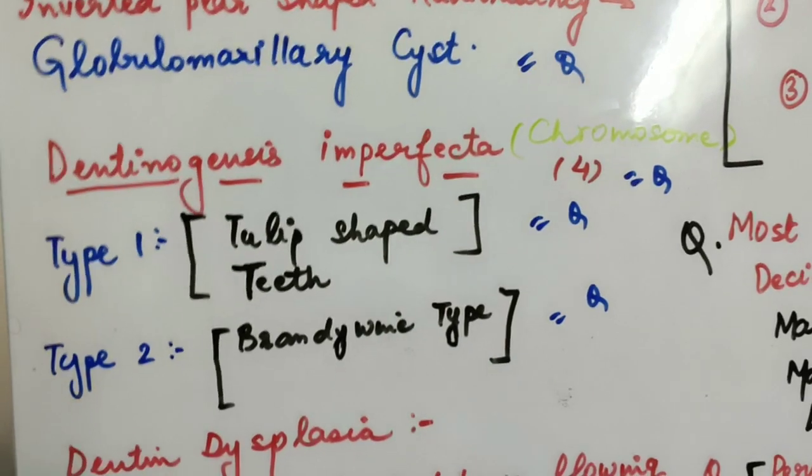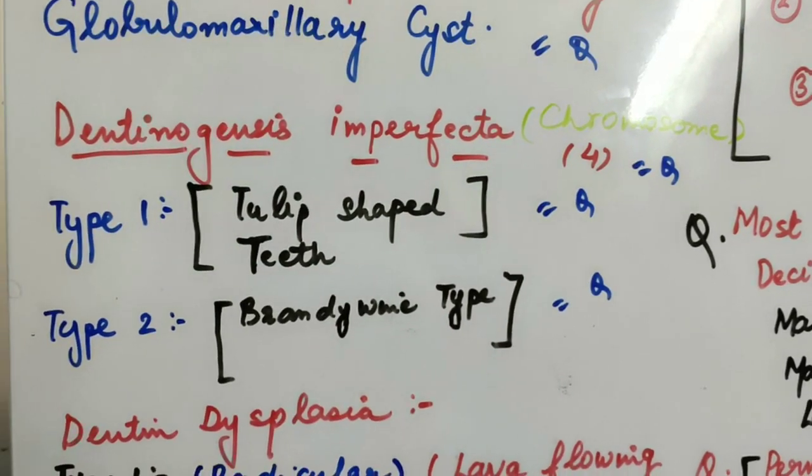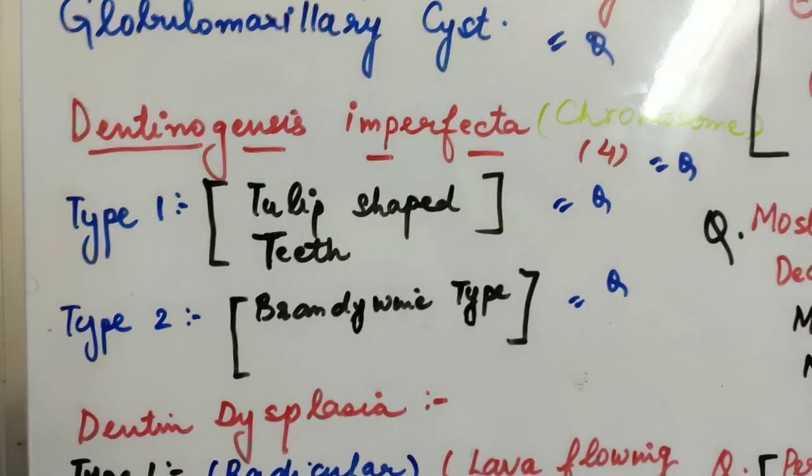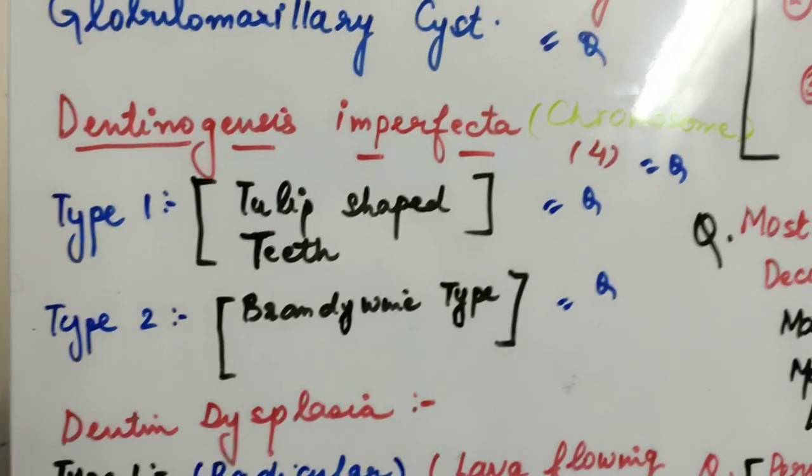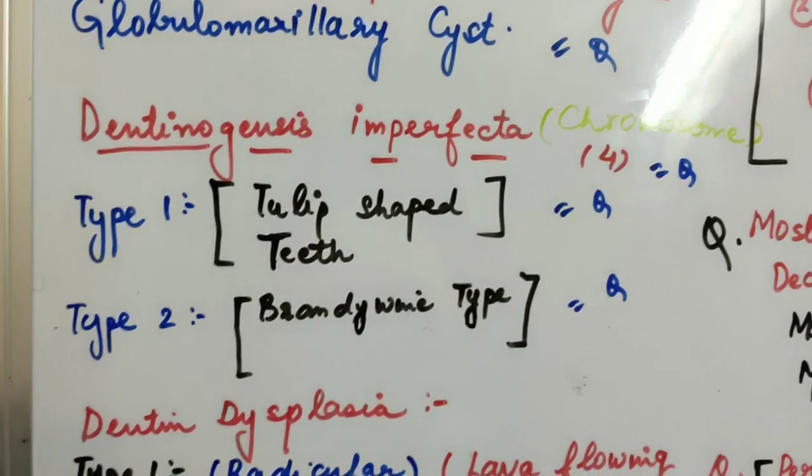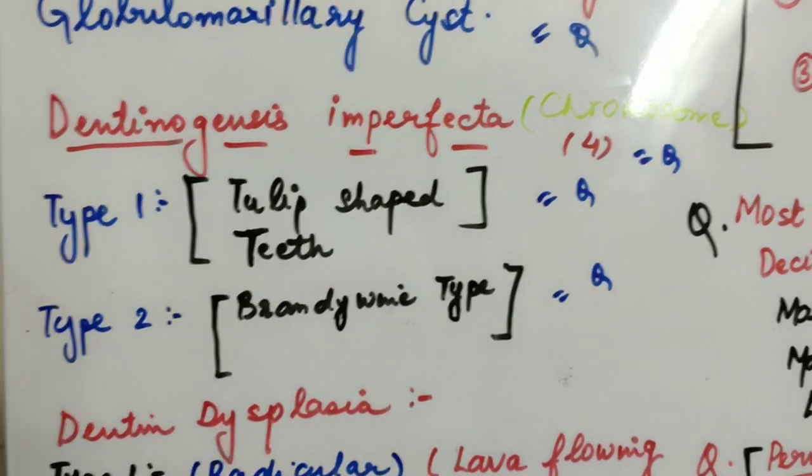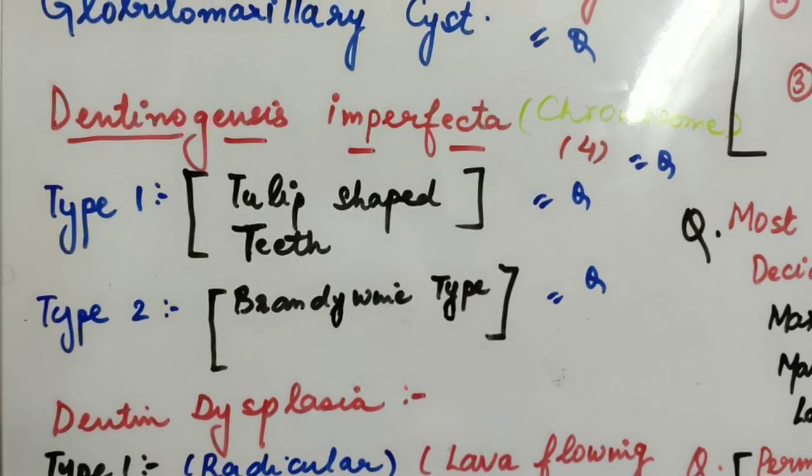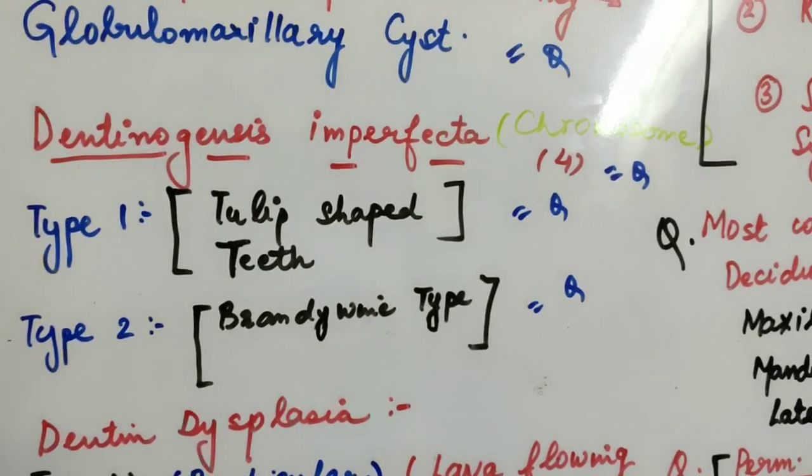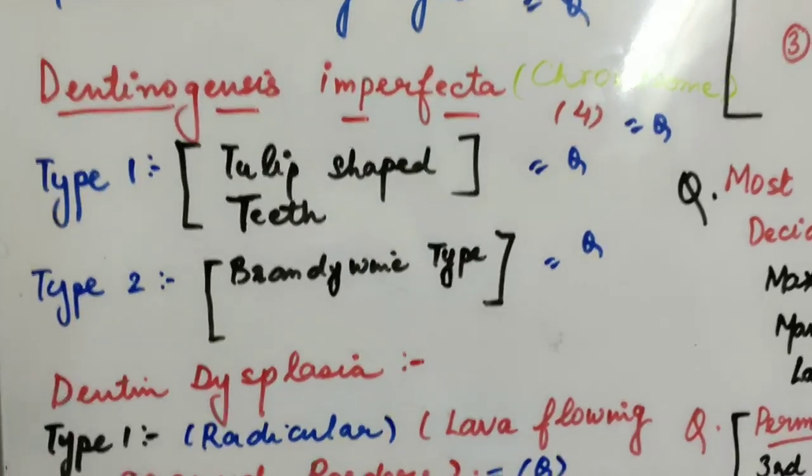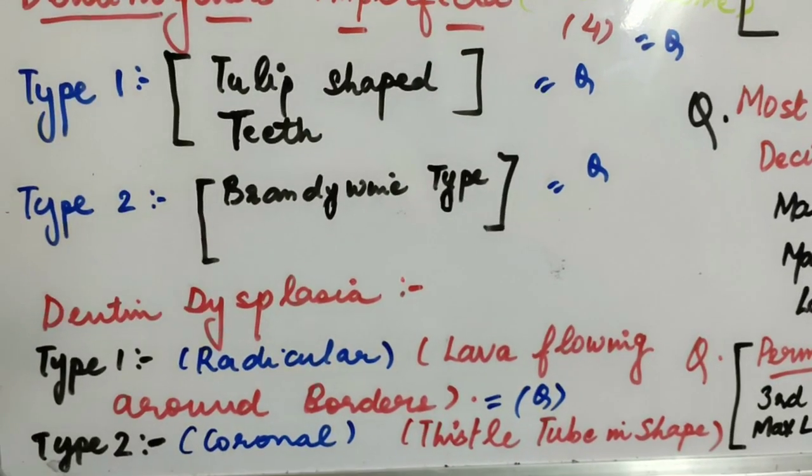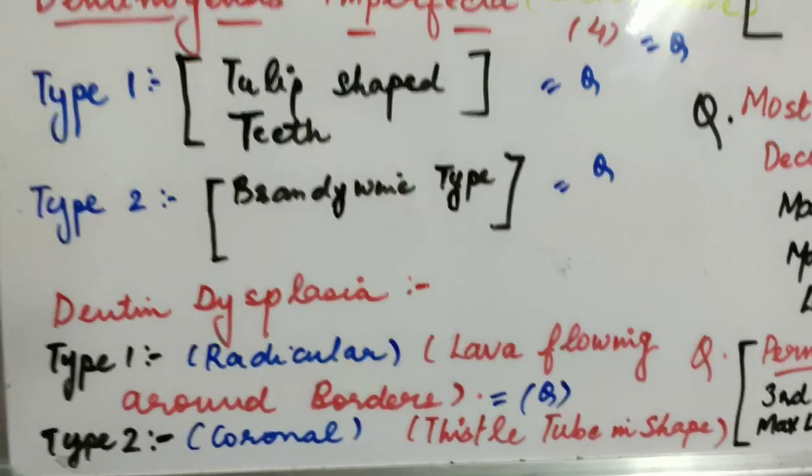The two types of dentinogenesis imperfecta you should know: Type 1, in which tulip-shaped teeth are seen. Type 1 - which teeth are seen? Tulip-shaped teeth. And type 2, that is brandy wine type. Type 2 is brandy wine type. Next question is about dentin dysplasia.